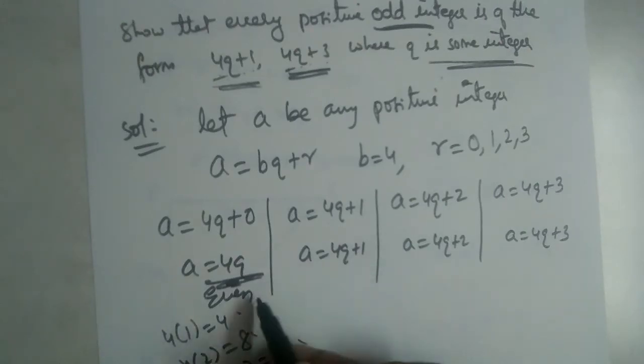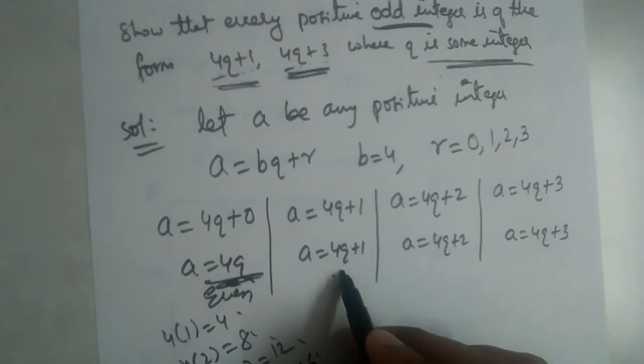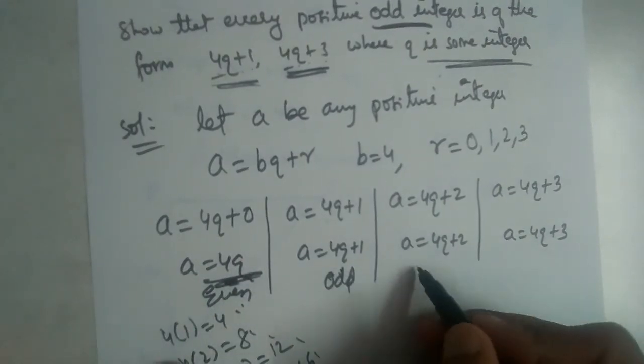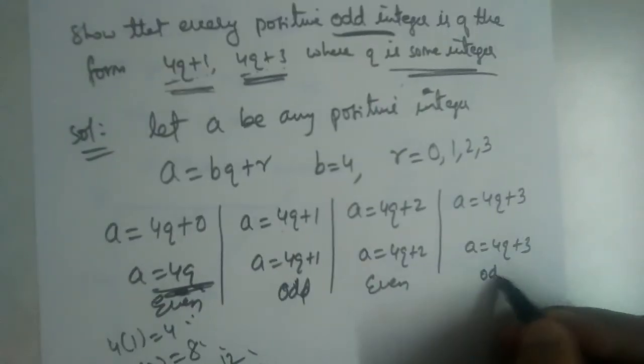4q plus 1 means these two are consecutive numbers. If one is even, the next number will be odd, the next number will be even, and the next number will be odd.